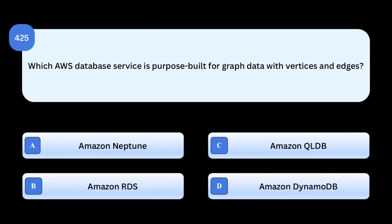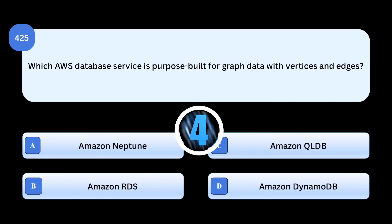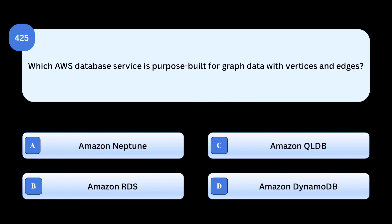Which AWS database service is purpose-built for graph data with vertices and edges?